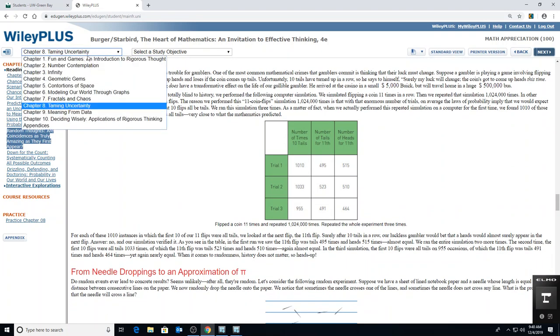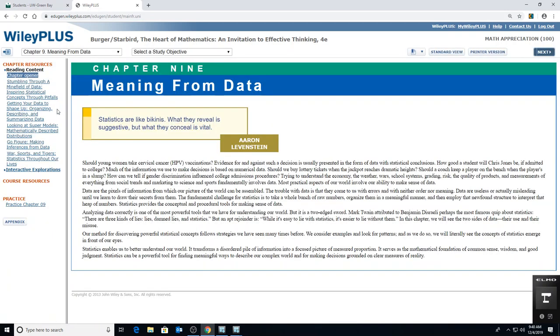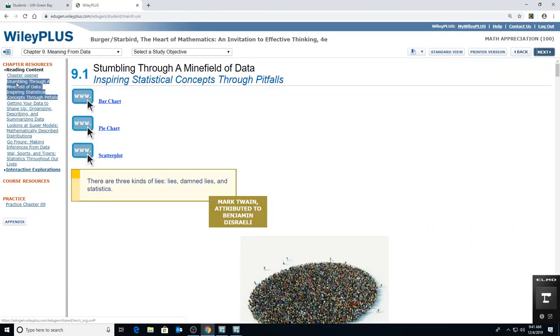So I'm not going to test you on 8.3 and it's not going to be on the quiz, but I did want to look at it with you because I think these are kind of interesting ideas. That randomness does happen and randomness does not mean evenly spread out. Clusters happen in randomness. I'd like you to read 9.1 on your own. I often assign, I actually usually assign 9.1 as a reading assignment. So you will go to chapter 9 in your read study prepare and then choose stumbling through a minefield of data.